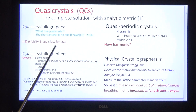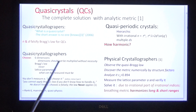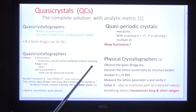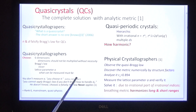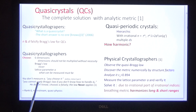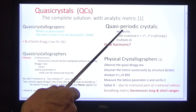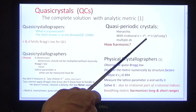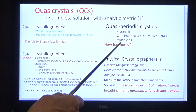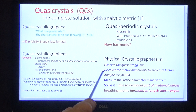To sum up, quasi-crystallographers choose six dimensions which should not be multiplied without necessity, choose Bragg's law, choose the lattice parameter. The editor of Acta Crystallographica wrote: you don't measure a, you choose it. He went on: you cannot apply Bragg's law if you don't know how to handle d. Well, he doesn't know — he chooses a falsely, the law never applies, and he uses rank-six mainstream quasi-physics. We know better. The structure is hierarchic, with irrational orders and multiple d's, and we shall discover how it becomes harmonic.